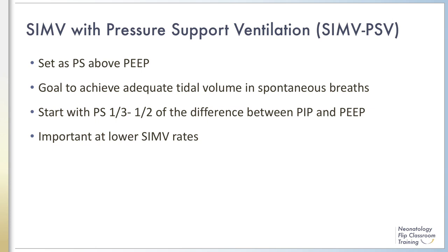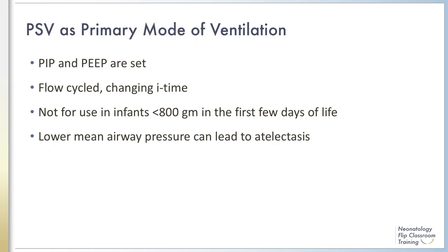Adding pressure support becomes more important as the rate of SIMV is decreased. Typically, infants can be extubated when they maintain good oxygenation and generate adequate tidal volumes on a pressure support as low as 6. PSV can be used as a primary mode of ventilation; in this instance the PIP and PEEP are set, and PSV is flow-cycled so the inspiratory time changes based on the patient. PSV as a primary mode should not be used in smaller infants, especially in the first few days of life. These infants have very short time constants which can lead to inspiratory times of less than 0.2 seconds, resulting in tachypnea and limiting the time for intrapulmonary gas exchange. The shorter inspiratory time in PSV can result in lower mean airway pressure, which leads to atelectasis unless a higher PIP is used to maintain lung inflation.